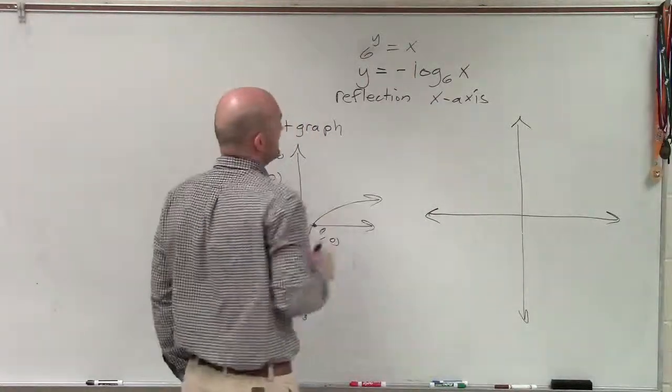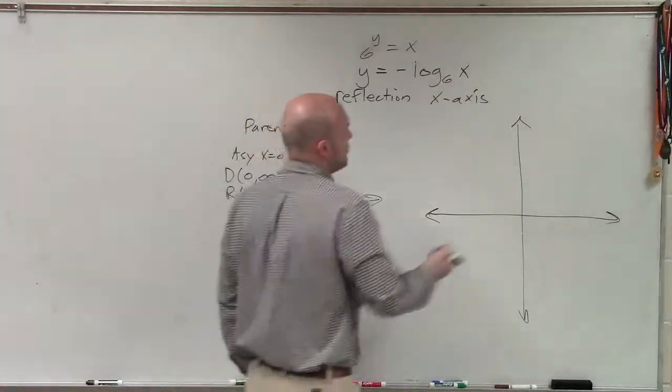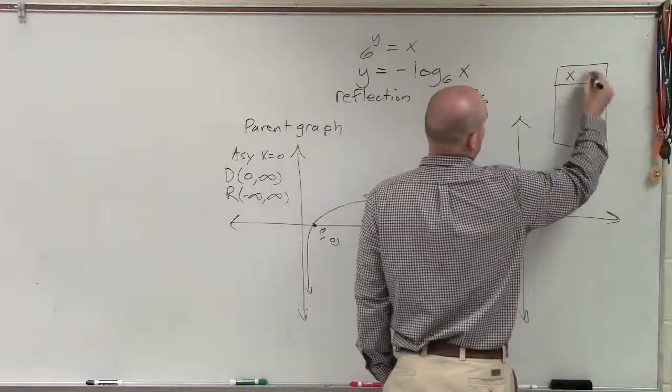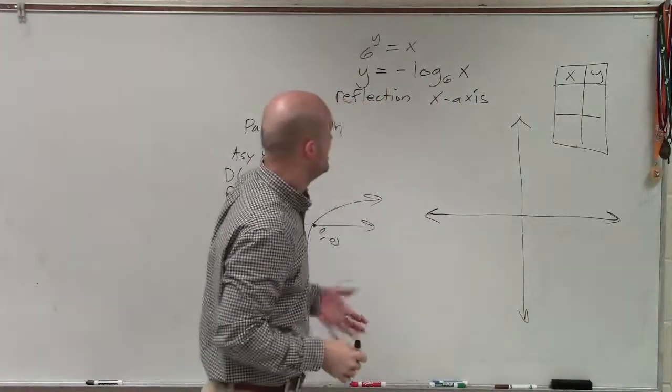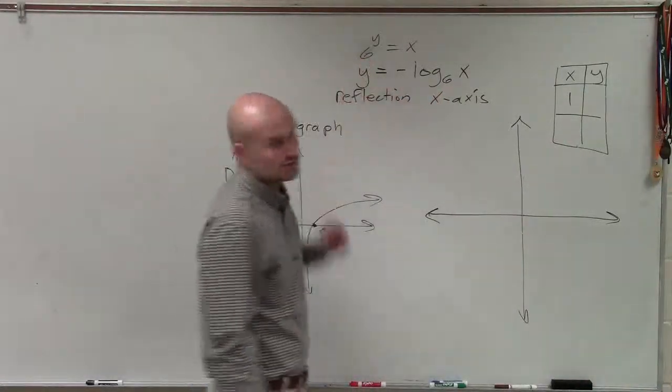So if I use the exponential equation 6 to the y equals x, I'm going to have some coordinate points I'm going to want to graph. So I just create a table of values. And when I'm graphing, I just want to choose kind of two points. And the best two points that I always like to use is when x equals 1 and when x equals my base.